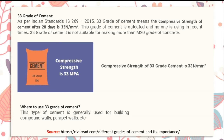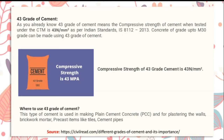Grade 43 cement: 43 grade of cement means the compressive strength of cement when tested under CTM is 43 N/mm², as per Indian Standard IS 8112:2013. Concrete up to M30 grade can be made using 43 grade cement. This type of cement is used in making plain cement concrete (PCC), plastering walls, brick mortar, and precast items like tiles and cement pipes.